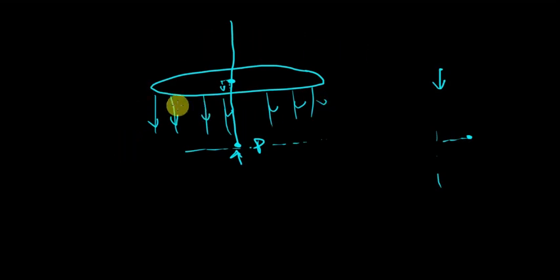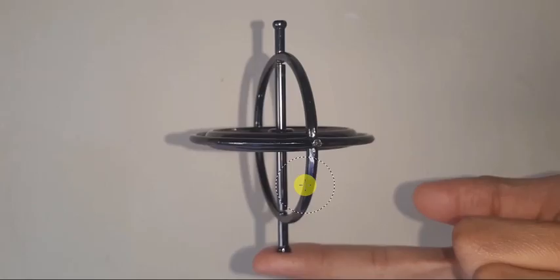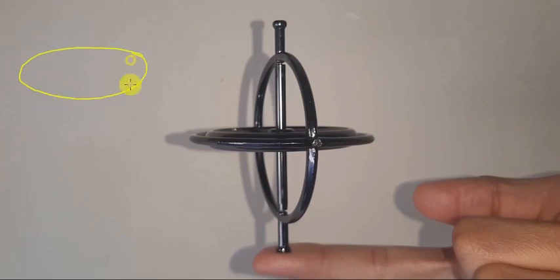Now what if this top is spinning? If we understand what happens when the top is rotating, we will finally understand how a gyroscope works. Here is our gyroscope balancing on my finger — we will now study its motion. Imagine a small part of this disk of mass M that is rotating.